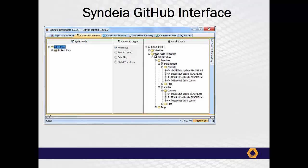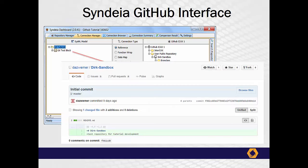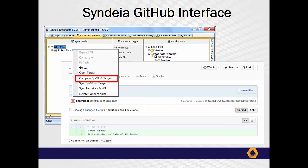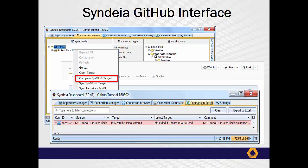GitHub is the first application lifecycle manager in the Cyndia domain. As connections to a PLM repository can point to a specific revision of a hardware item, GitHub connections can reference a specific software commit or file revision, and detect if a later version has been committed.